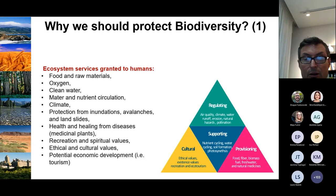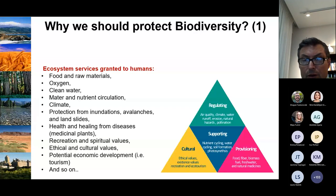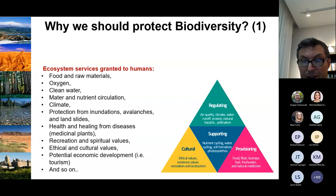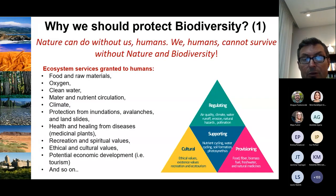All these are interrelated and are explained by the so-called ecosystem services granted to humans. We divide them into four main components: provisioning services, supporting services, regulating services, and cultural services. All together, they make it clear that we humans cannot survive without nature and biodiversity.